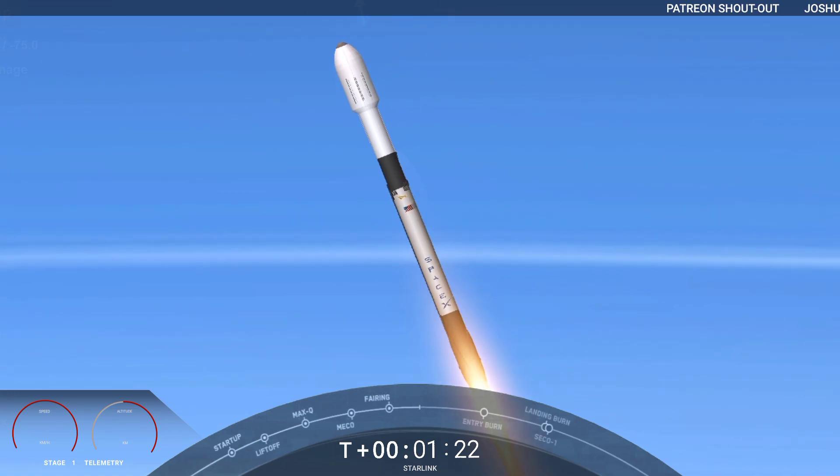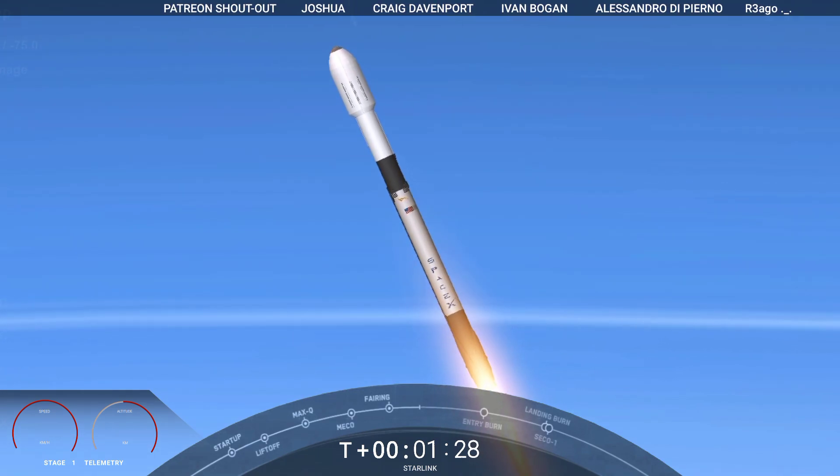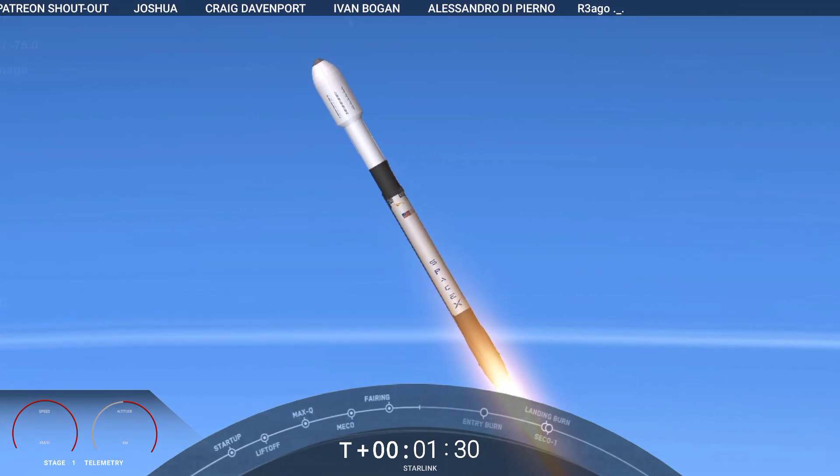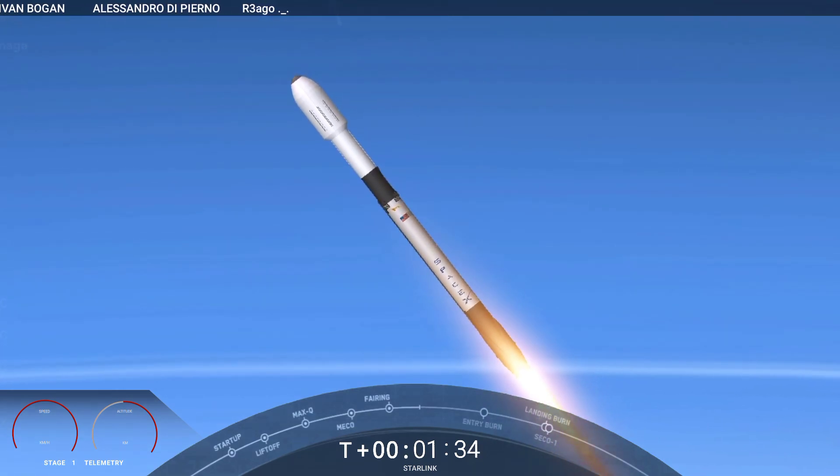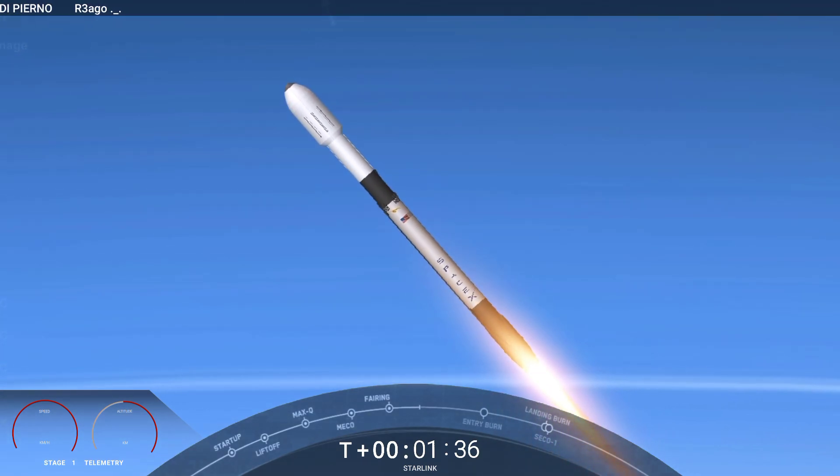We have a couple of events happening in quick succession. In about a minute, first up we'll have main engine cutoff, also known as MECO, followed by stage separation and then second engine start one, also known as SES-1.